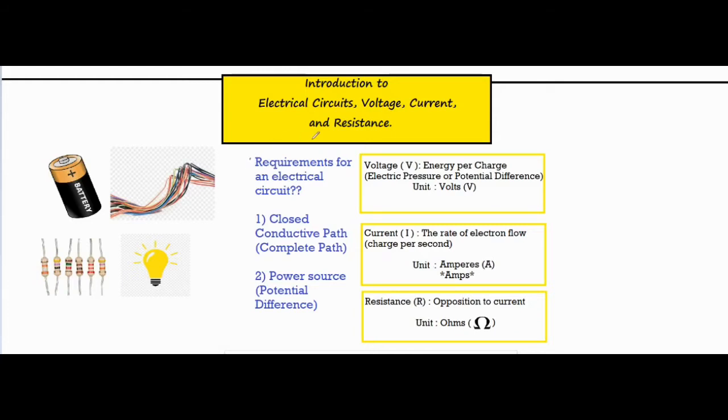So the most important thing to understand is definitely the requirements for an electrical circuit. Now opinions may vary on this, but you definitely need these two components right here, which are one: a closed conductive path or what's also known as a complete path or closed circuit, and number two: you need some kind of power source, which is also known as a potential difference as well.